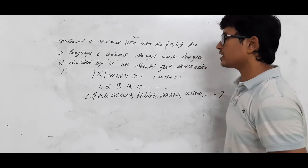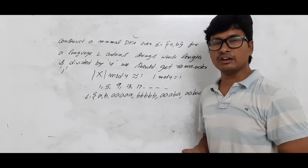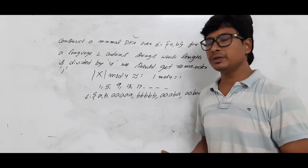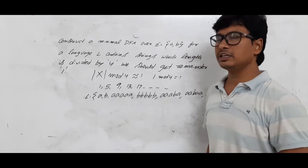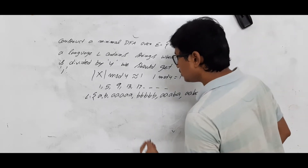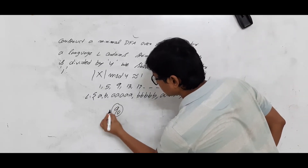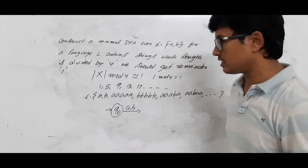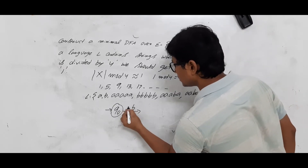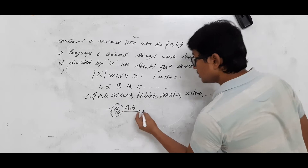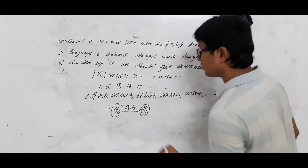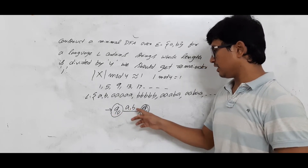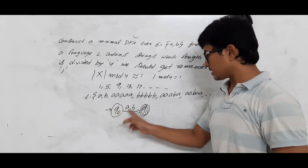This language is an infinite language. If the language is infinite, there may or may not be a DFA — we will check if one is available. Since it should accept strings of length one, the initial state q0 will not act as a final state. q1 is acting as a final state, because from the initial state q0, by traversing one symbol (a or b), you reach q1, accepting strings of length one.